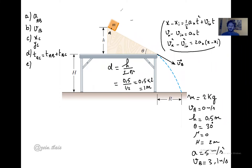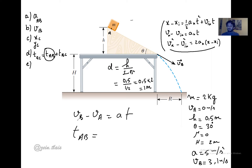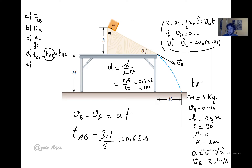Now calculating the time between A and B. We use: vB minus vA equals a times t. So time AB equals vB divided by a, which equals 3.1 divided by 5, giving t-AB equals 0.62 seconds.